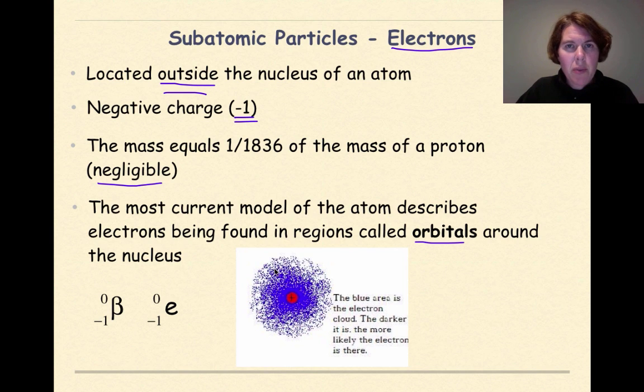Electrons have two ways of being represented on table O of your reference tables. One is a capital beta, as we see right here, or another way of representing it is a lowercase e, or sometimes your teacher might represent it like this, with more of a cursive e, like that. So these are different ways of representing electrons.